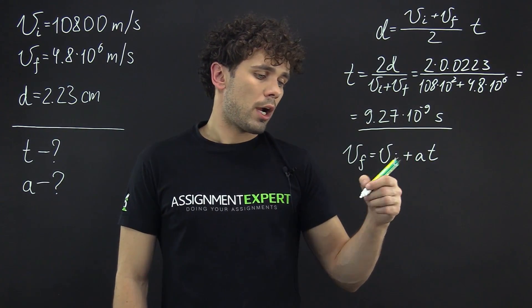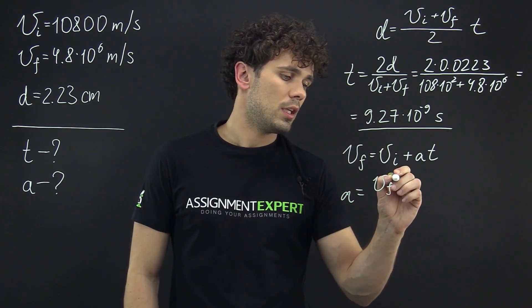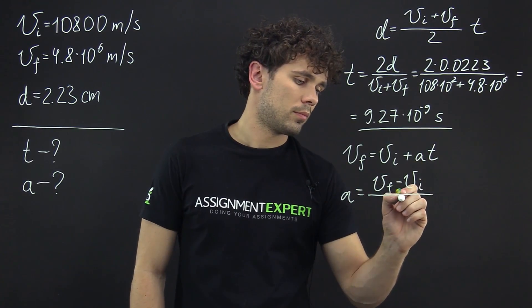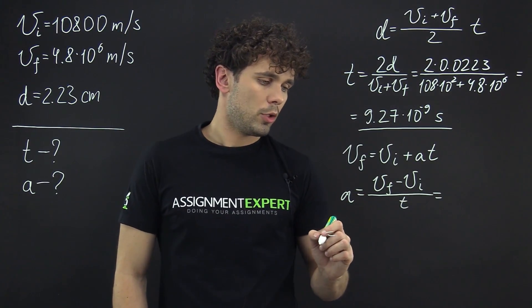From here we derive acceleration as vf minus vi over t. And we get the following.